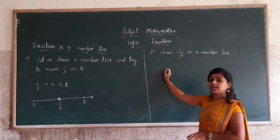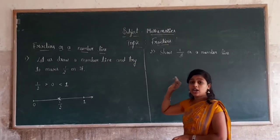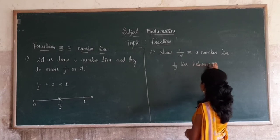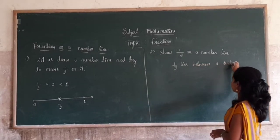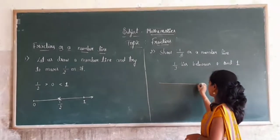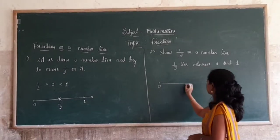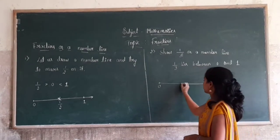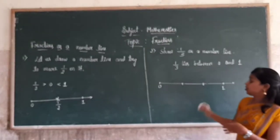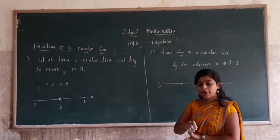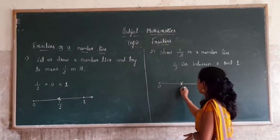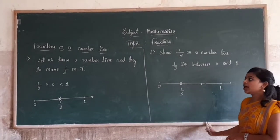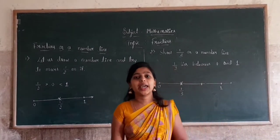1 by 3 is between 0 and 1. We divide the gap between 0 and 1 into 3 equal parts. Now locate 1 by 3 on this number line. This is how we show fractions on a number line.